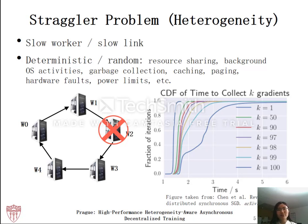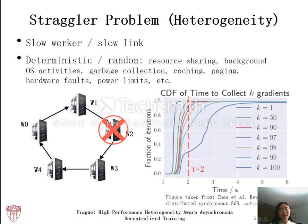To demonstrate the effect of heterogeneity, here is a figure from Chen et al. 2016 that has received over 300 citations. The authors track the time to collect gradients of one variable from 100 workers. The x-axis is time in seconds, and the y-axis is the fraction of iterations in which k gradients are received within time t. For example, within 2 seconds we can collect 50 gradients in almost all iterations tested, but in only around 30% of iterations can we receive all 100 gradients. The time needed to collect all 100 gradients can fluctuate a lot — the longest observed was 130 seconds.